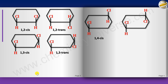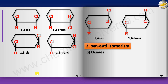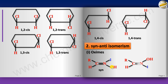The next type is syn-anti isomerism, commonly illustrated with oximes. Oximes are C=N compounds where nitrogen carries an OH group. Nitrogen also has a lone pair, giving two different groups on nitrogen. If the H on carbon is on the same side as the OH, we call it syn. If the H is on the opposite side from OH, we call it anti.